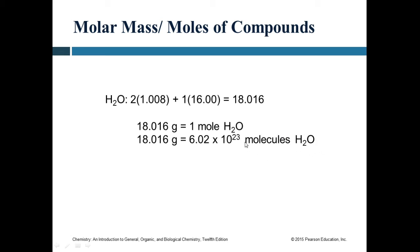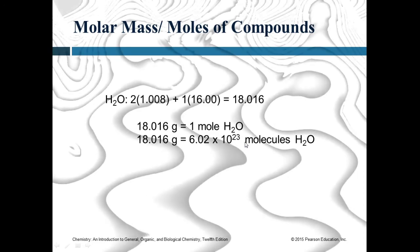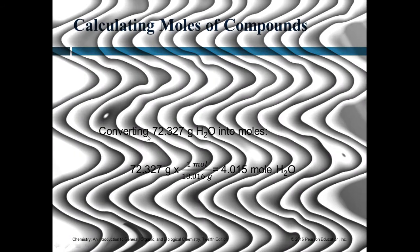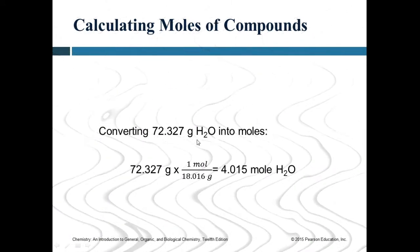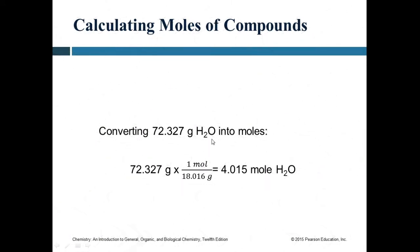Most of the time you're going to be given a non-round number, like 72.327 grams of water. We convert that into moles by dividing by its molar mass, which we previously calculated as 18.016.